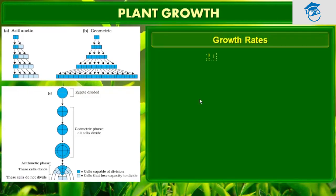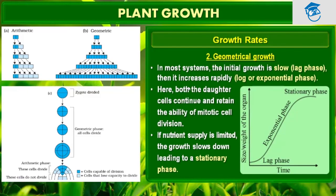In geometric growth, the initial growth is slow — that is the lag phase — and it increases rapidly thereafter at an exponential rate, as shown in the log or exponential phase. Here both progeny cells follow mitotic cell division, retaining the ability to divide and continuing to do so. However, with limited nutrient supply, the growth slows down, leading to the stationary phase. If we plot the parameter of growth against time, we get a typical sigmoidal or S-shaped curve — a sigmoid curve is characteristic of living organisms that grow in a natural environment, and is typical for all cells, tissues, or organs of a plant.